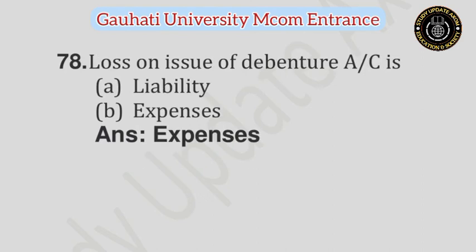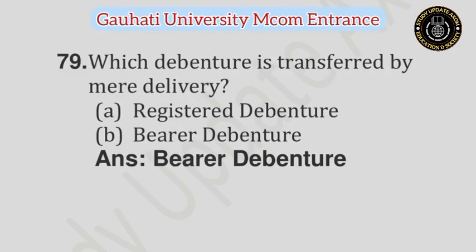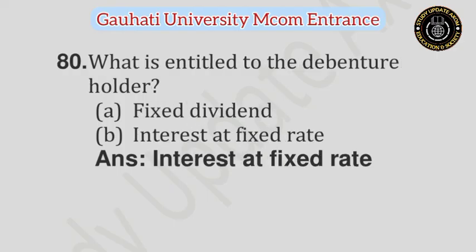Question number 78: Loss on issue of debenture account is — Option A: Liability, Option B: Expenses. Answer is Expenses. Question number 79: Which debenture is transferred by mere delivery? — Option A: Registered debenture, Option B: Bearer debenture. Answer is Bearer debenture. Question number 80: What is entitled to the debenture holder? — Option A: Fixed dividend, Option B: Interest at fixed rate. Answer is Interest at fixed rate.